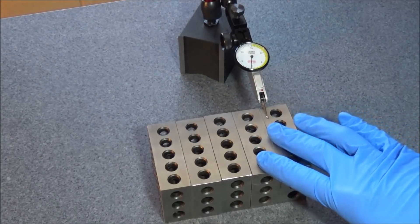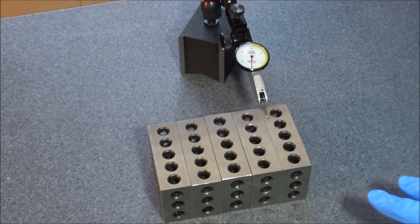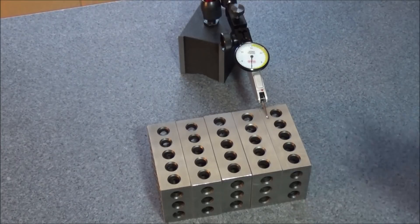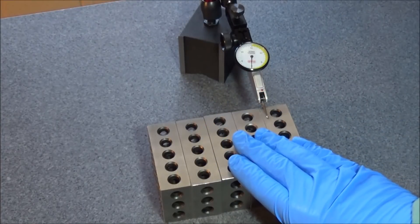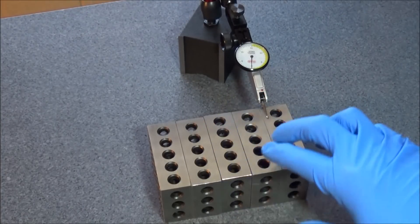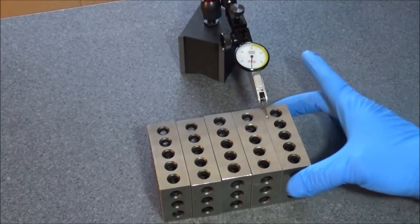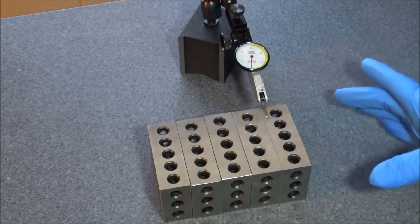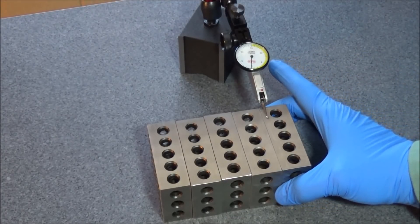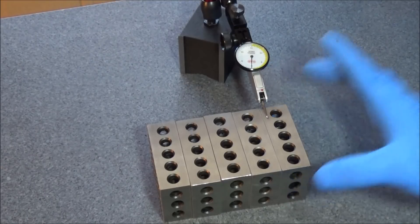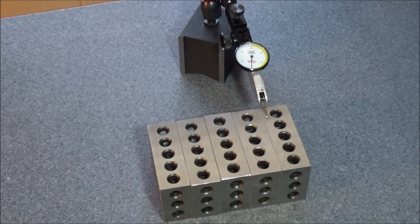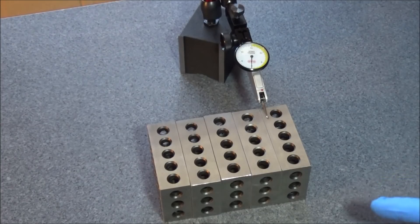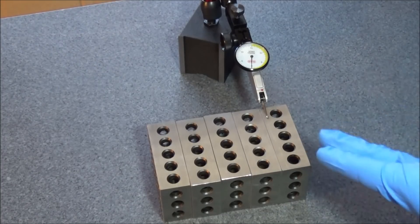After posting my last couple of videos where I was checking the ways on the Precision Matthews, I got a few comments about the 1-2-3 blocks and whether or not I checked them to make sure they were dimensionally accurate. That was a real good question and I failed to mention that in the videos, so I thought I would take a minute and just talk about that.